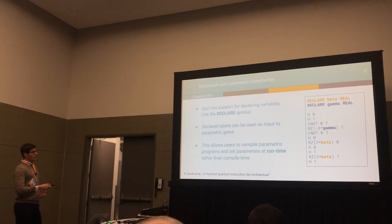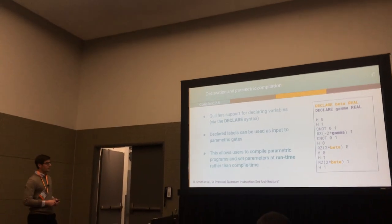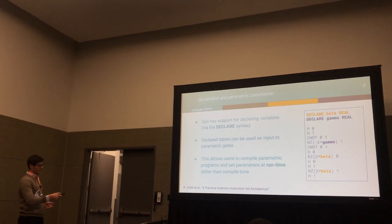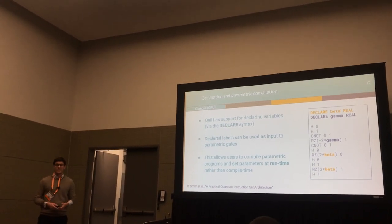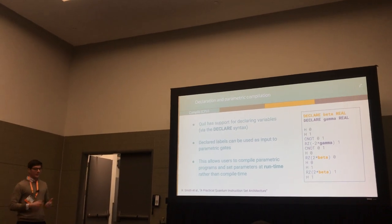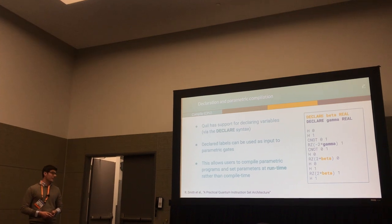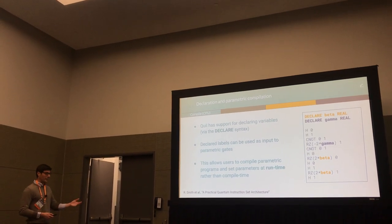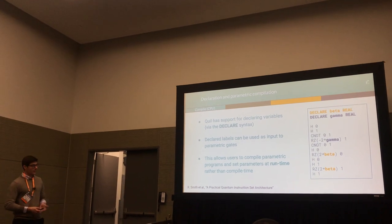Fortunately, Quill has support for declaring variables via this declare syntax, and once declared, these labels are used as input to parametric gates, effectively replacing the constants that we saw before. What this does is allow our compiler toolchain to essentially defer the assignment of these variables from compile time to when the binaries themselves are executed, which we call runtime.